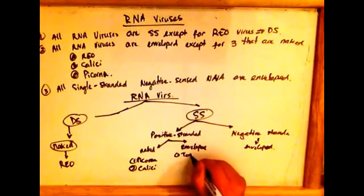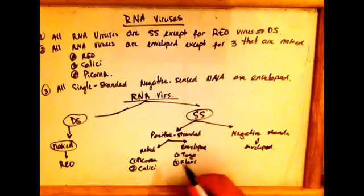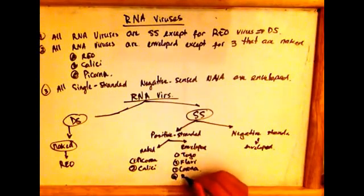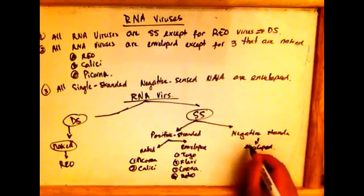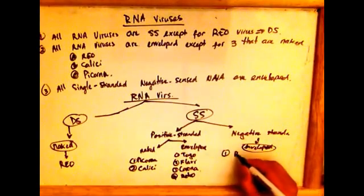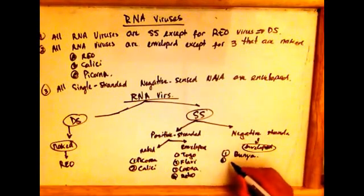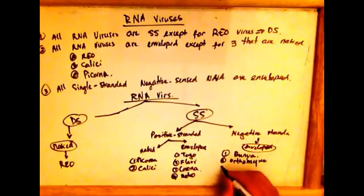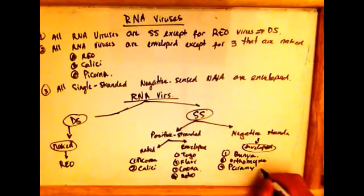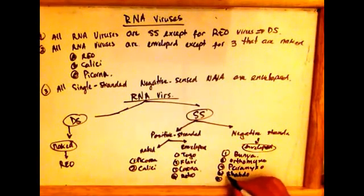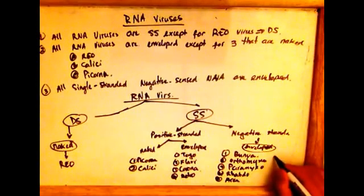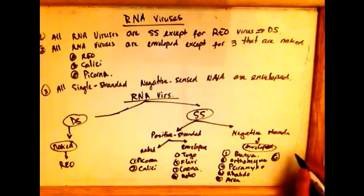The enveloped single-stranded positive sense RNA viruses include the togavirus, the flavivirus, the coronavirus, and the retrovirus. In the single-stranded negative sense enveloped RNA category, we have the bunyavirus, the orthomyxovirus, the paramyxovirus, the arenavirus, and the filovirus.